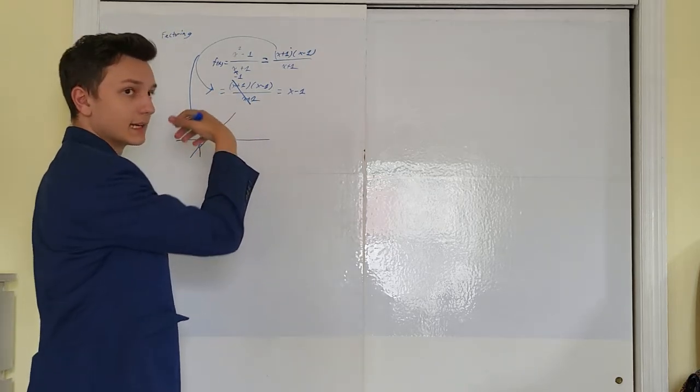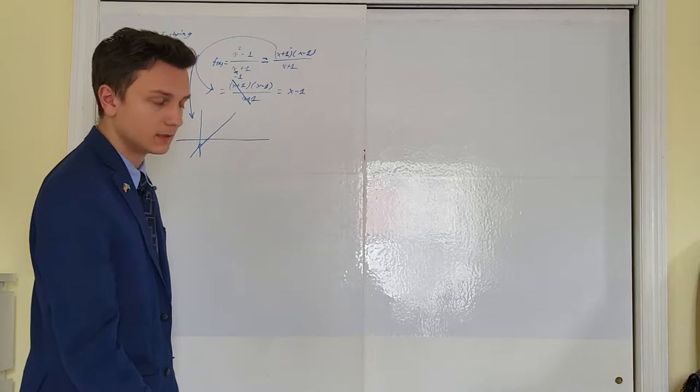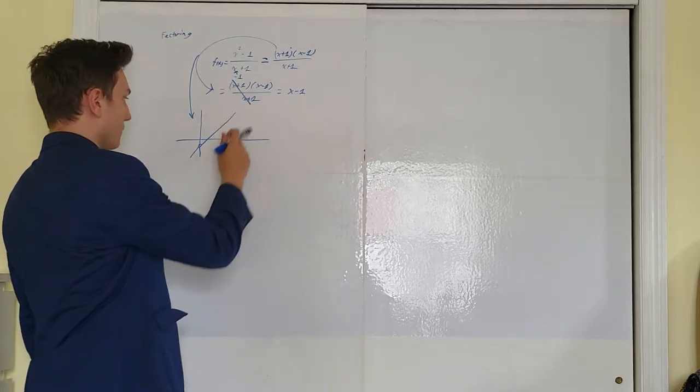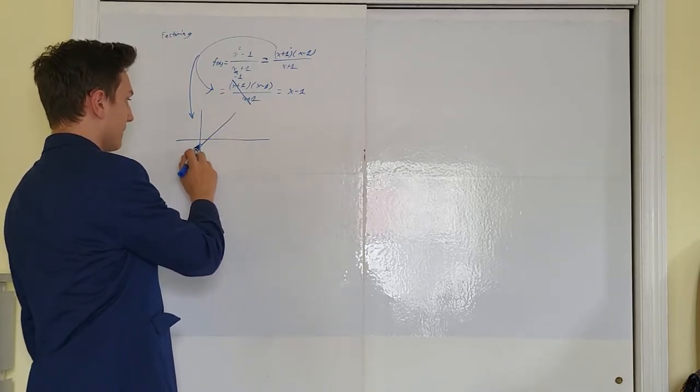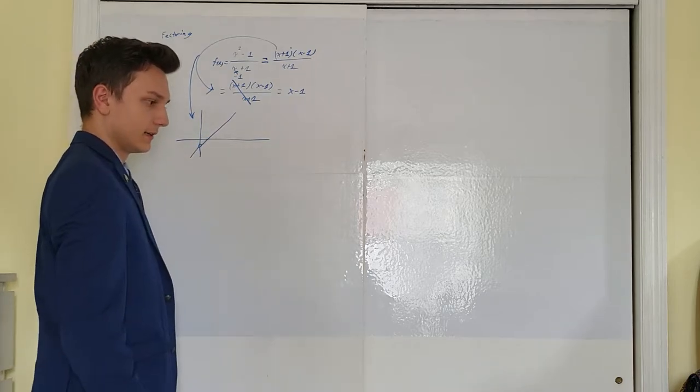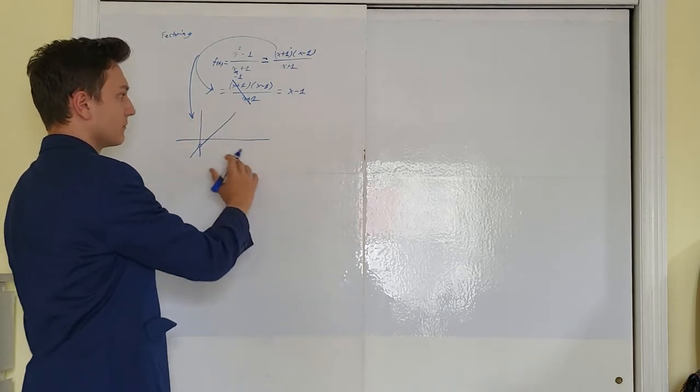However, as we just showed, it's a removable discontinuity. Okay, we remember removable discontinuities, they happen at just a point, they happen at just this open circle right here. All right, makes sense.